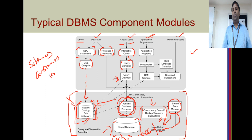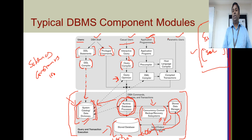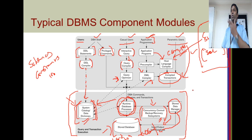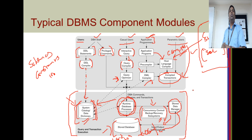Application programmers write programs — say a C program — that contain both C statements and embedded SQL queries. The C statements are handled by the host language compiler, while SQL is separated and given to the DML — data manipulation language — compiler. Both compiled outputs are merged together to create a compiled transaction. Parametric users, like bank tellers, just enter two parameters such as amount and account ID, and the compiled transaction is directly executed on the database using those inputs.